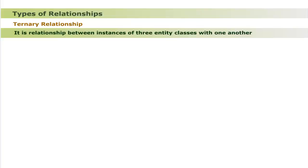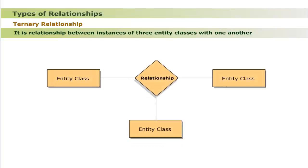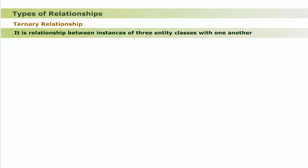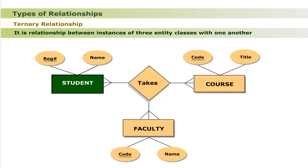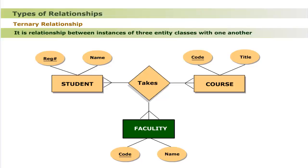A ternary relationship is a relationship between instances of three entity classes with one another, meaning three entity classes are involved. For example, many students register many courses and many faculty members teach many courses. In this model, the relationship 'takes' connects logically three entity classes: Student, Course, and Faculty Member. The number of entity classes for a given relationship is not restricted to three — any number of entity classes can be used.